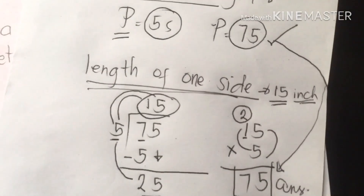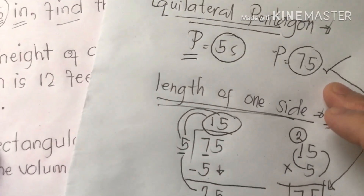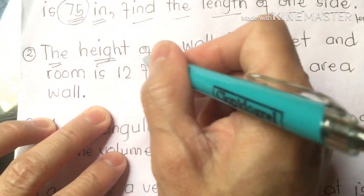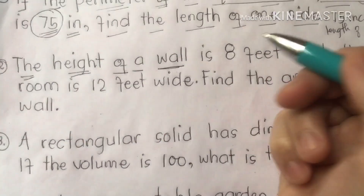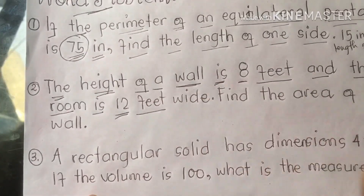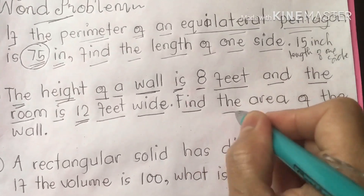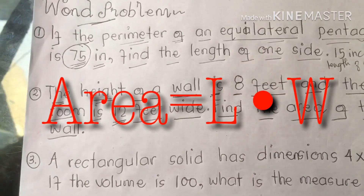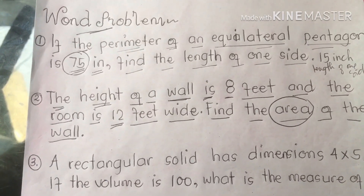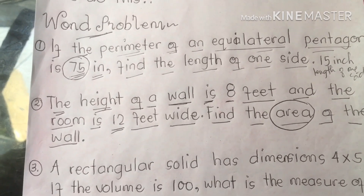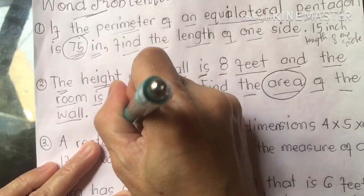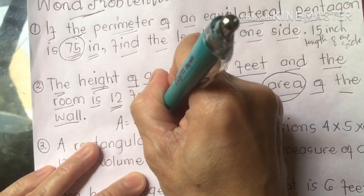We are going to proceed to word problem number two. The height of a wall is 8 feet and the room is 12 feet wide. The question is: find the area of the wall. To find the area, you need to master the formula. I'm going to give you the formula so that you can solve it.